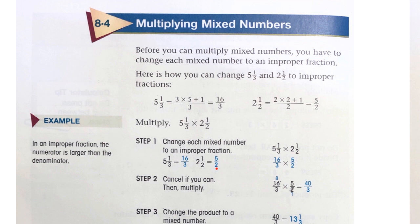Step 2, cancel if you can, then multiply. 2 and 16 have a common factor of 2. 1, 2 goes into 2. 8, 2 goes into 16.